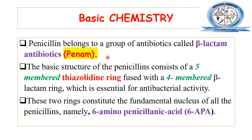The penem ring nucleus of the beta-lactam is composed of two heterocyclic rings: one is the five-membered thiazolidine ring, which is fused with the four-membered beta-lactam ring. These two rings are fused together to form the basic ring nucleus for penicillin, known as 6-aminopenicillanic acid. At the sixth position we have the 6-acylamino side chain, where different functional groups are present to modify the structure and create synthetic derivatives. The four-membered beta-lactam ring is essentially essential for antibacterial activity.